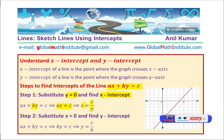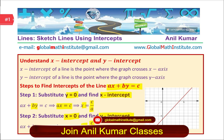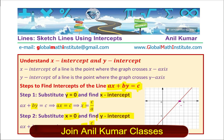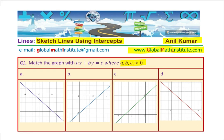Depending on whether c over a is positive or negative, the x-intercept falls on the right or left side. To find the y-intercept, substitute x equals zero — the y-intercept is c over b. So whenever the equation is in the form ax plus by equals c, the x-intercept is c over a and the y-intercept is c over b. Keeping that in mind, let us answer the questions one by one.